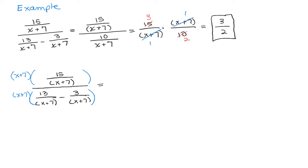So I have X plus 7 times 15 over X plus 7. So if I wrote that down, X plus 7 times 15 over X plus 7. Let's see what's going to happen here. And then I have to distribute for this other one. I have X plus 7 times 13 over X plus 7. So I have X plus 7 times 13 over X plus 7 minus X plus 7 times 3 over X plus 7.